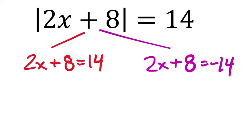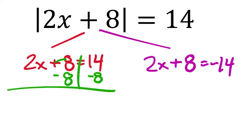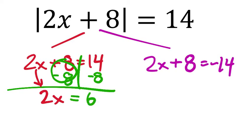Solving these, I'll do the red one first. I subtract 8 from both sides, zeroing that out. I drop my 2x, which now equals 14 minus 8, which is 6. Then divide all terms by 2, so x equals 3.